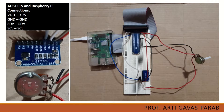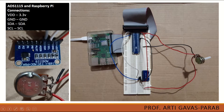Here is the circuit setup. We are using the ADC component, which comes with this pin specification: positive voltage, ground, SCL, and SDA. These are the two communication connections we need to make on the board, plus positive and negative voltage connections. Channel 0 is the one for which we have programmed our ADC to listen.